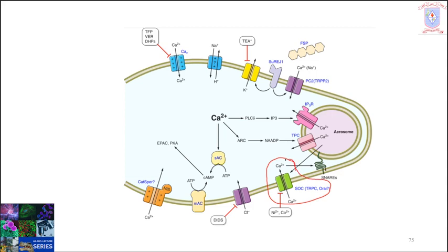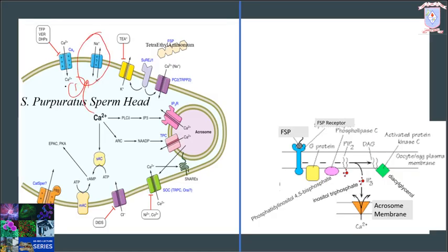SOCs — store-operated calcium channels — on the sperm plasma membrane would then be activated, allowing a sustained calcium increase fundamental to triggering the acrosomal reaction. This SOC transporter maintains a higher calcium level inside the cytoplasm of the sperm and triggers the acrosomal reaction. Activation of this transporter is the first action of increased calcium level; ARC activation is the second action; and the third action is the activation of adenyl cyclase.